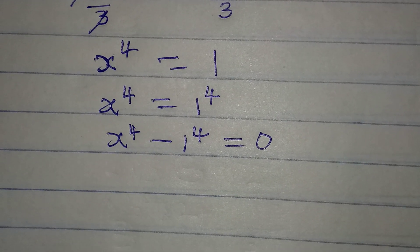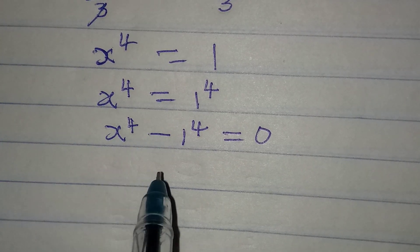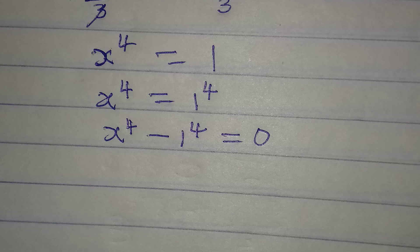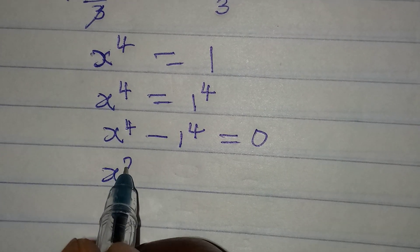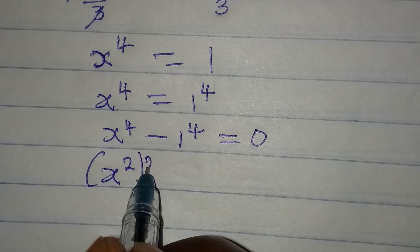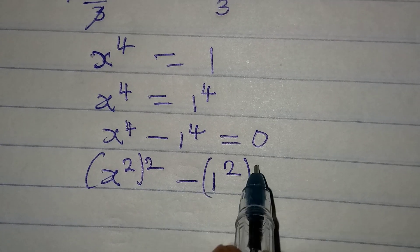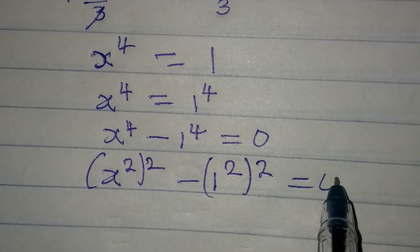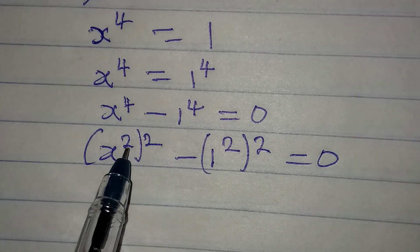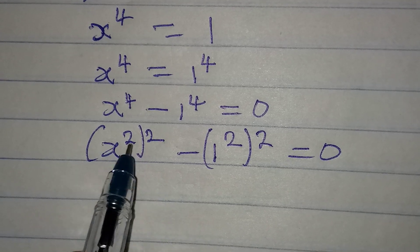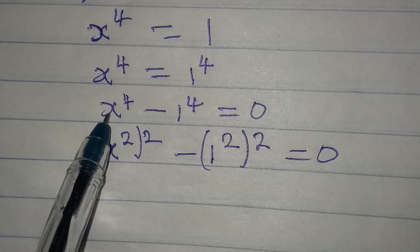Now look at the way I'm going to break this down into two. I already have something in mind. So x squared, squared, minus 1 squared, squared equals 0. This is because if you have brackets separating two powers, you can always multiply the powers — so it will give you x to the power of 4.